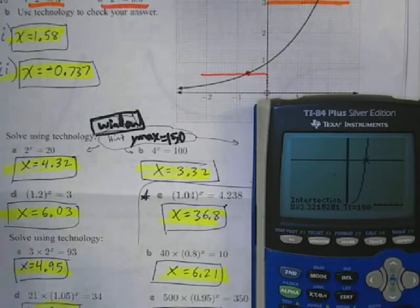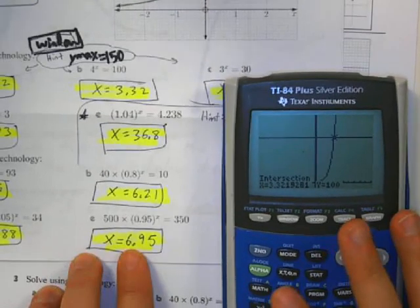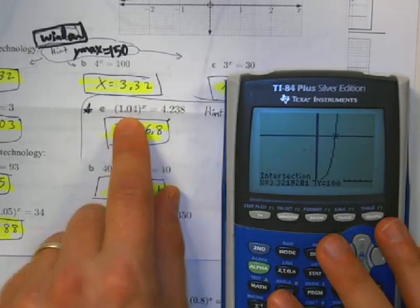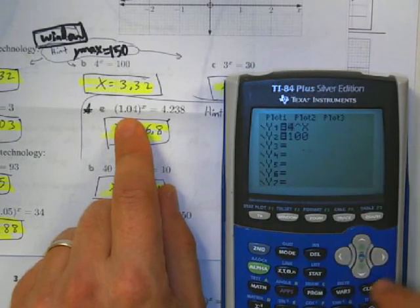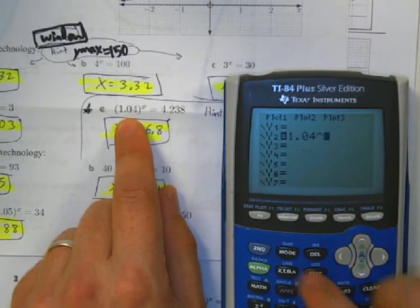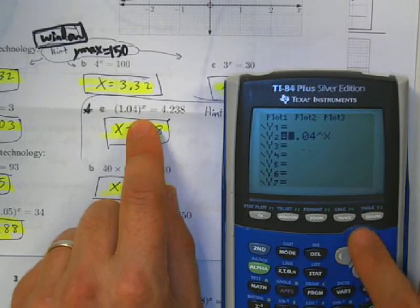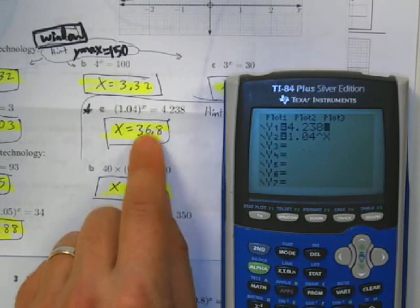Now, I'm going to do question E, because some people were saying it never intersects. So let's type this in. Clear, clear. 1.04 to the power of x, and the other equation is 4.238. And then if you hit graph, it doesn't look like you see anything, does it?